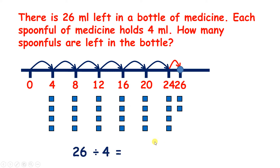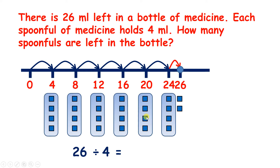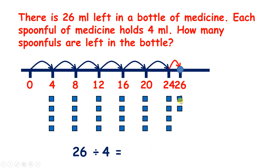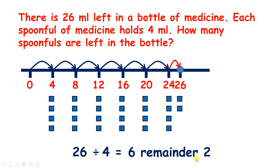So with twenty-six divided by four, we can make six groups of four, and we have two remainders. So twenty-six divided by four equals six remainder two. But that can't be our answer, because you can't have six remainder two spoonfuls.